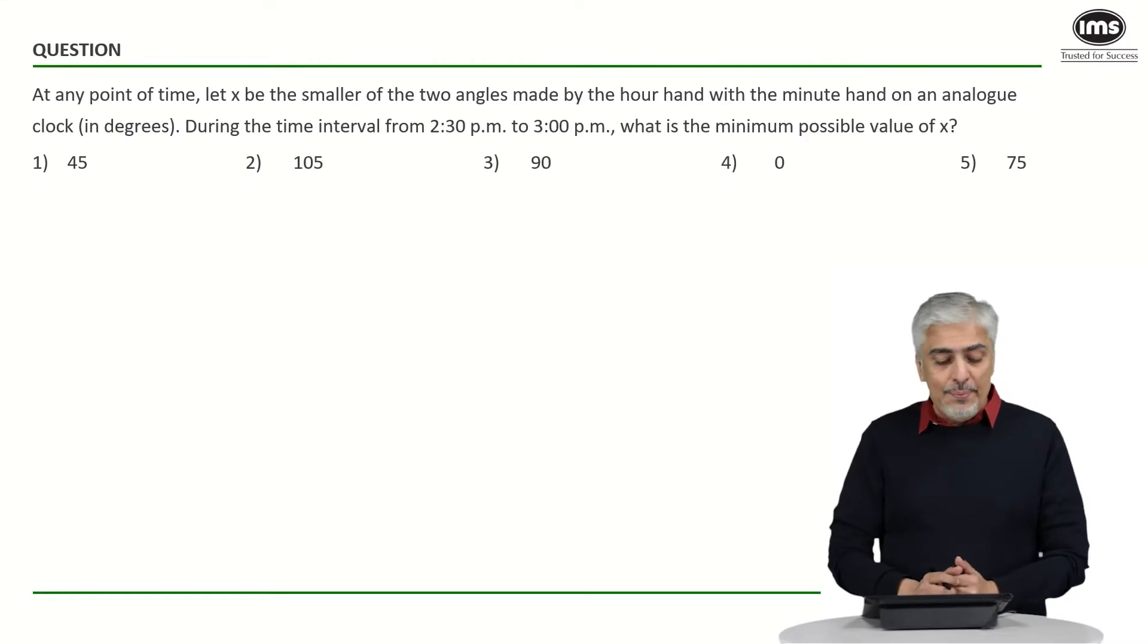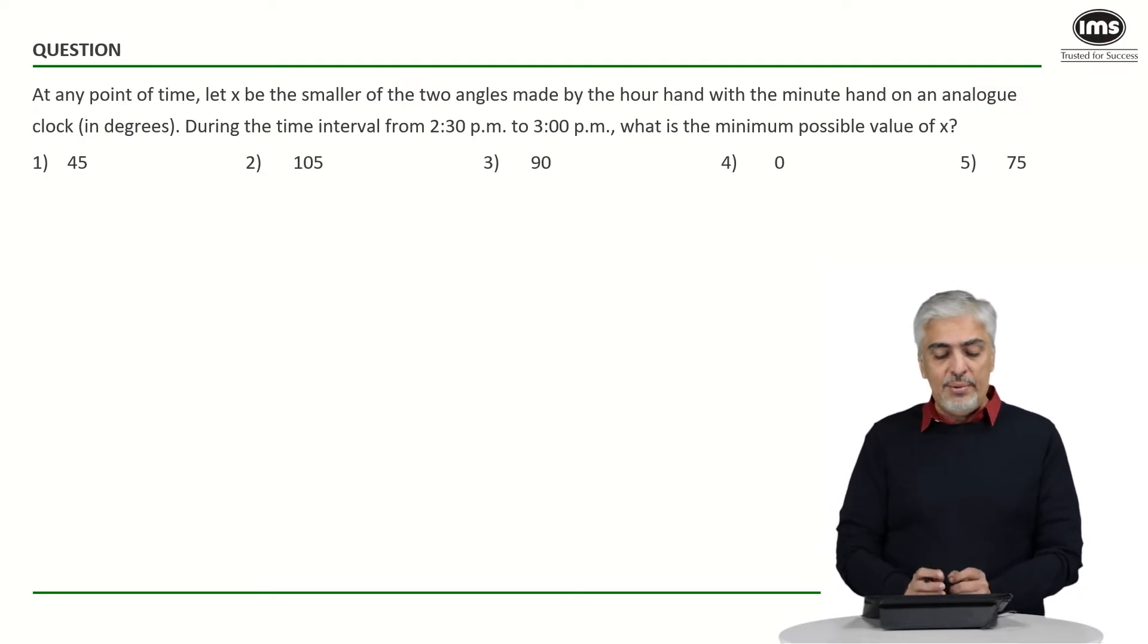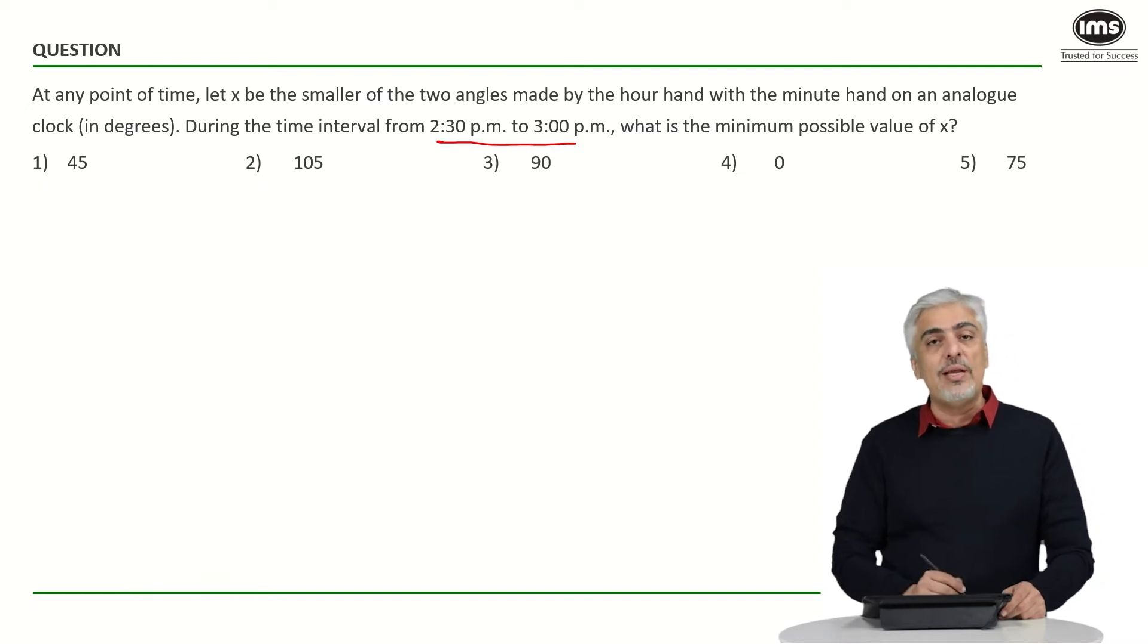So at any point of time, they have said let X be the smaller of the two angles made by the hour hand and the minute hand on an analog clock. That's a regular clock. During the time interval between 2:30 and 3 p.m., what is the minimum possible value which X can take?